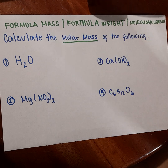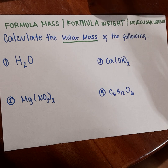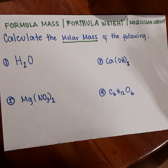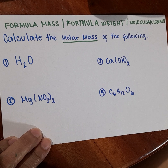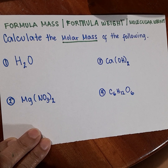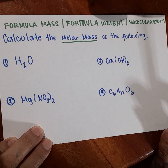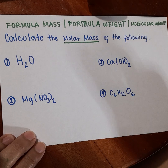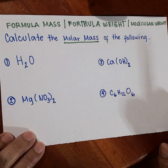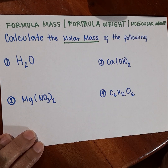To get the formula mass of a substance, you multiply the atomic mass of each element by the number of atoms of that element in the compound. First, determine what the elements of the compound are. Then identify how many atoms each element has. After that, find the atomic mass of each element, and then add them all together to get the molecular mass or formula weight of the compound.